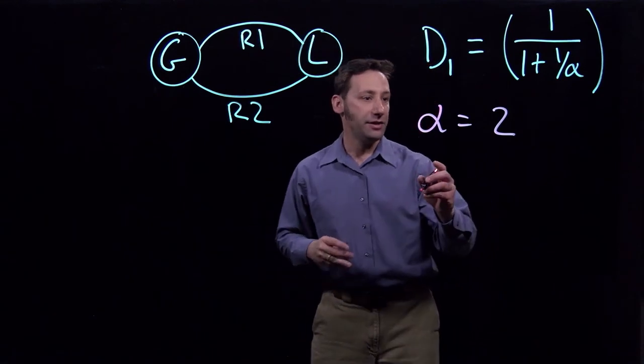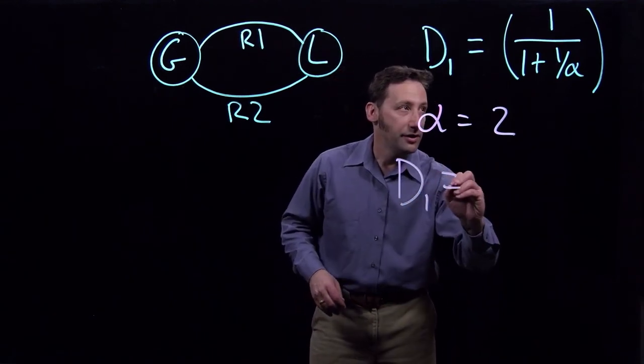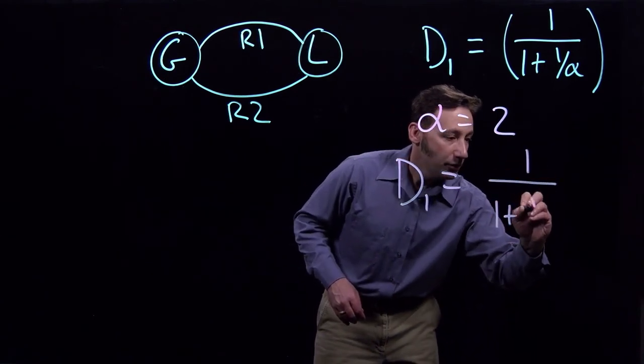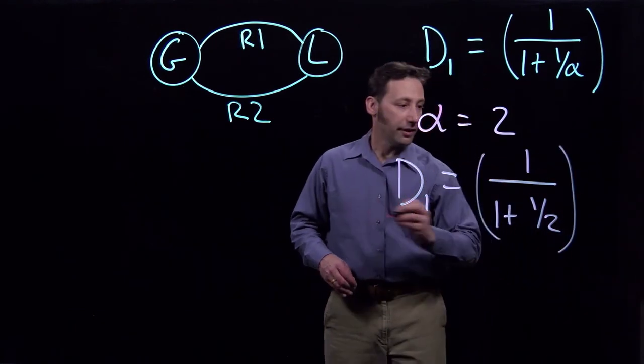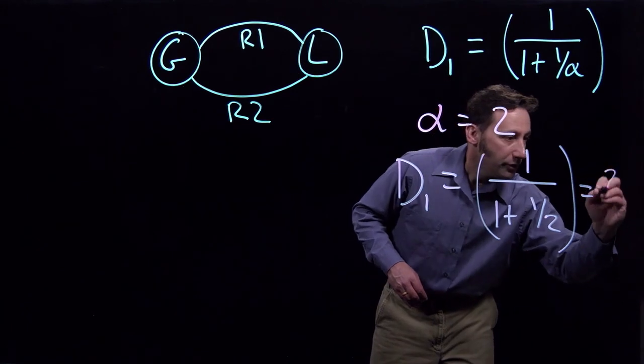So when we calculate D1 in this case, we're going to get D1 is equal to 1 over 1 plus 1 half. Or D1 is equal to 2 thirds.